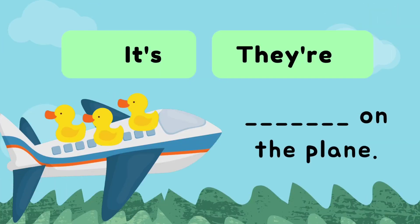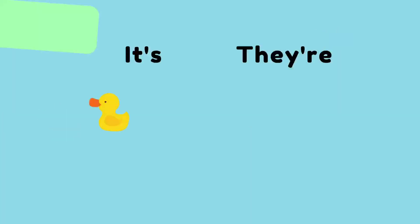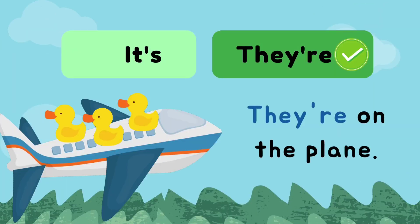Now, it's on the plane or they're on the plane? Can you tell me the answer? Very good. The answer is they're on the plane. We use there because there are three ducks on the plane — it's more than one.